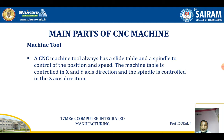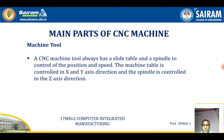The machine tool device is where the actual machining takes place. A CNC machine always has a slide table and spindle to control the position and speed. The machine table controls the x and y-axis direction, and the spindle is controlled in the z-axis direction. The required machined result is obtained with the help of the machine tool devices.